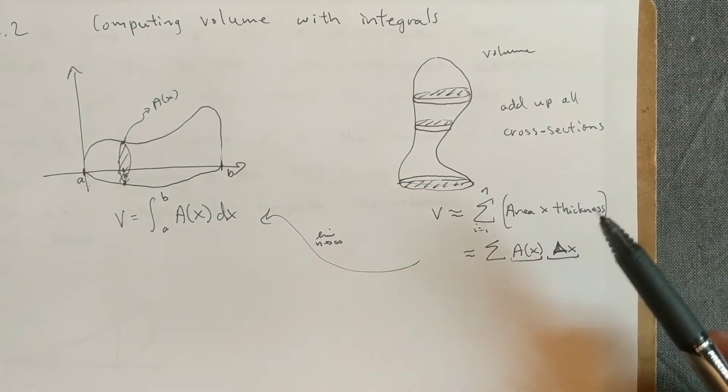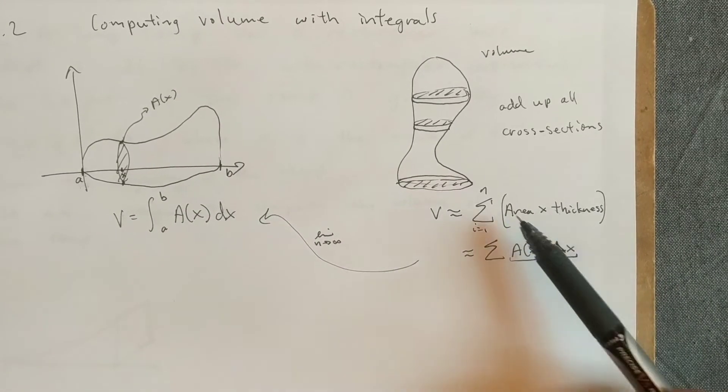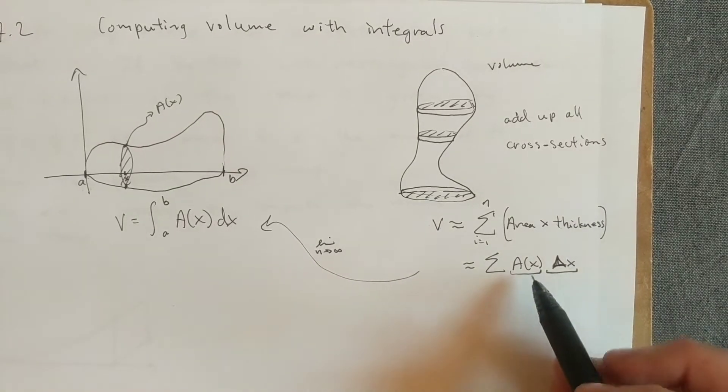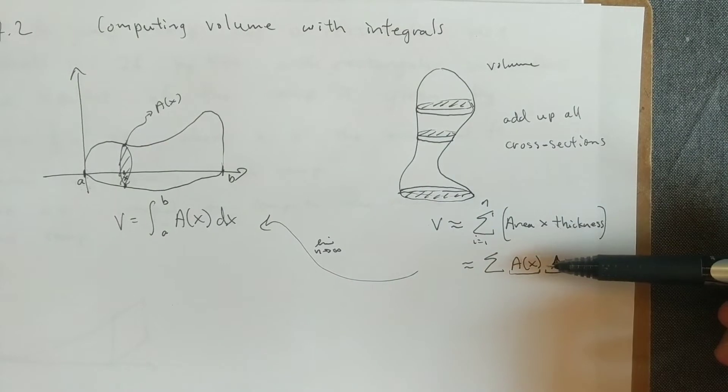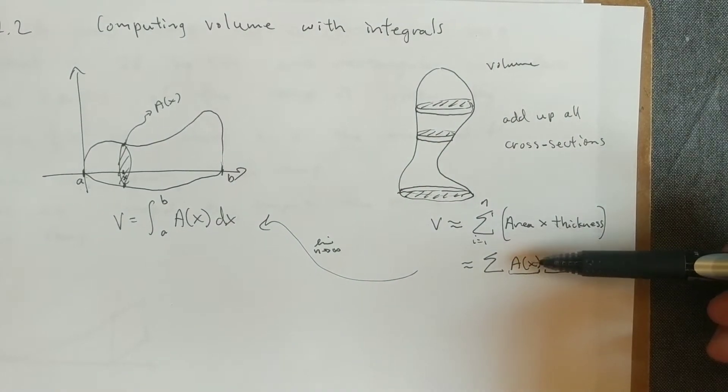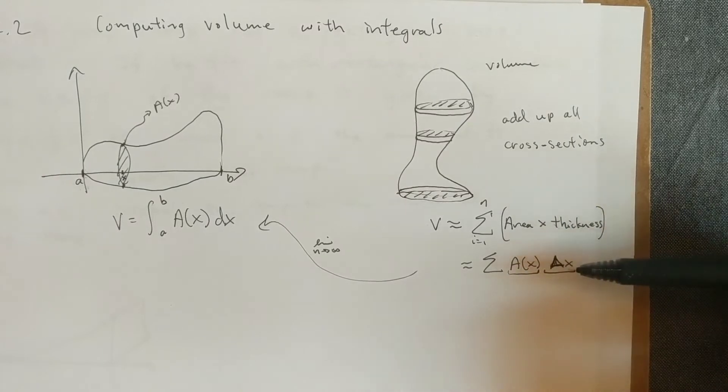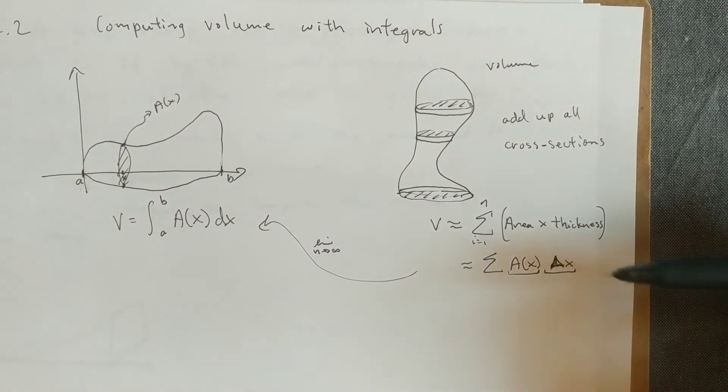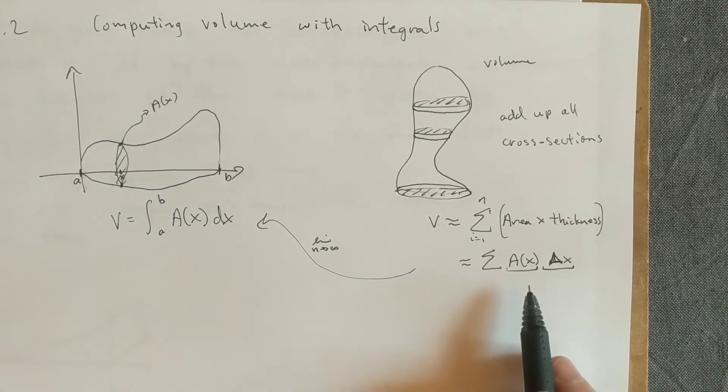Since each one of these will be approximately prisms, you can just do the area times the thickness, and then we'll add all these volumes up. Since area is changing as you go through, you can think of this as a function of x, and so we'll have this area given by a function of x, a of x, and the thickness, if we always use the same one, we can call delta x. So we can essentially set this up like a Riemann sum,